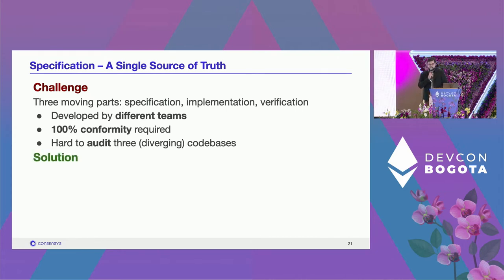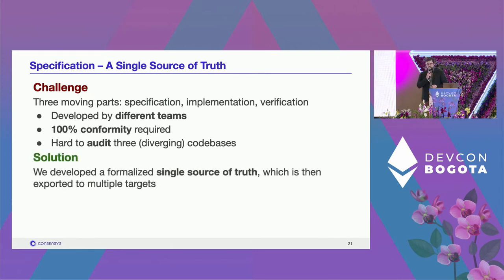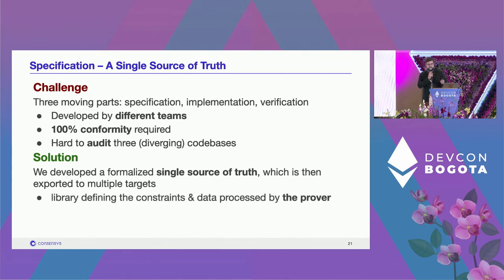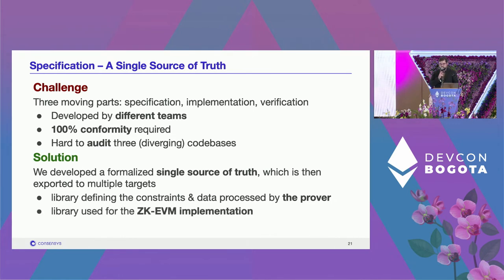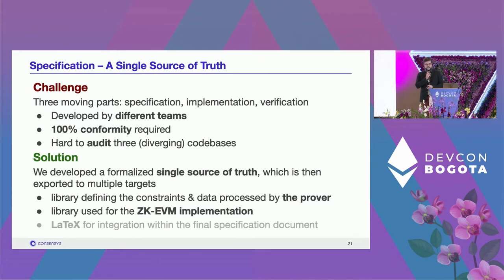The solution we found is a formalized single source of truth, exported to multiple targets. From a single description of the constraint system, we produce: a Go library defining the constraints for the prover, another Go library used by the ZKEVM implementation to ensure conformity with the specification, and LaTeX output for integration into the final 250-page specification document.